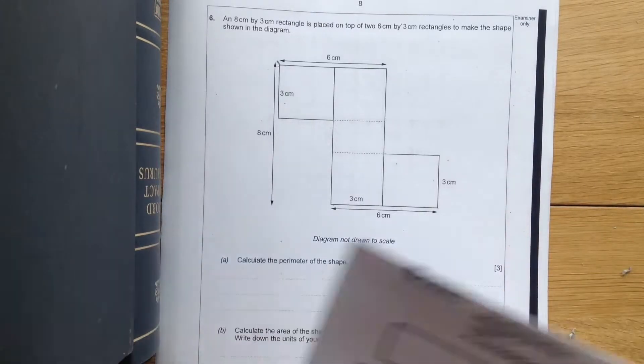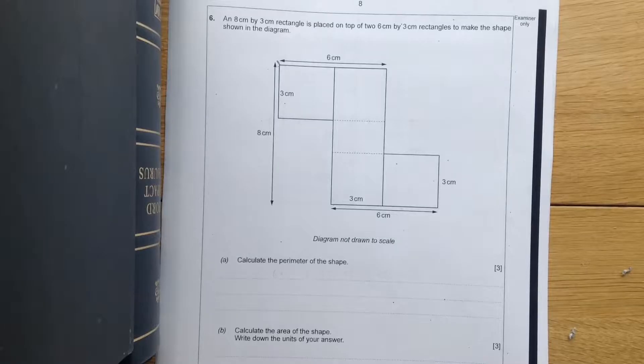Question 6. An 8x3cm rectangle is placed on top of two 6x3cm rectangles to make a shape shown in the diagram.